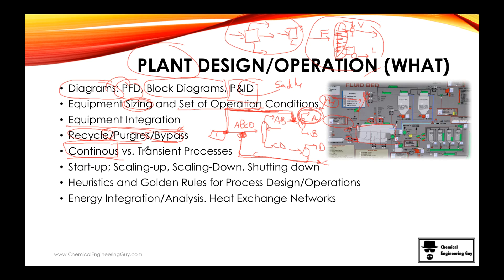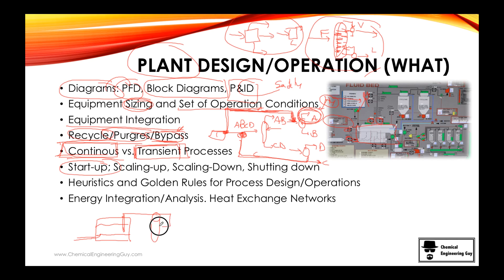We're going to talk about continuous processes, and we'll analyze transient state processes as well, though continuous processes are the most important part of this course. Transient state processes include startup of a plant — if we have a new plant, we need to know how to start it up: fill the tanks, get the levels right, use a condenser, achieve the reflux ratio, and operate a pump full of liquid, not liquid and gas.